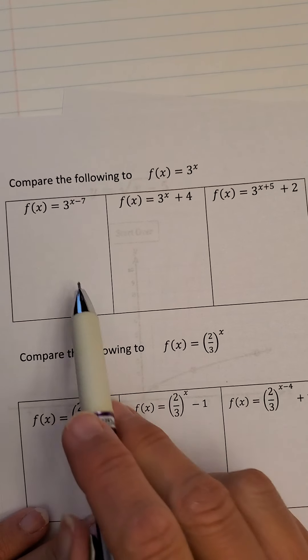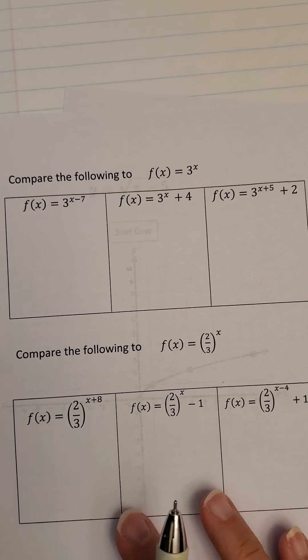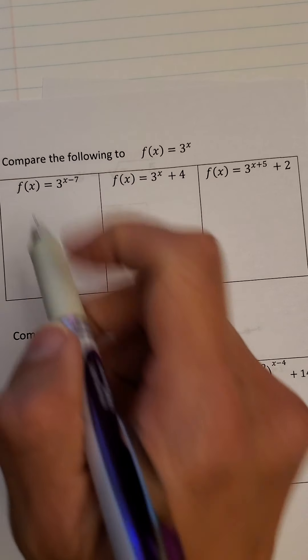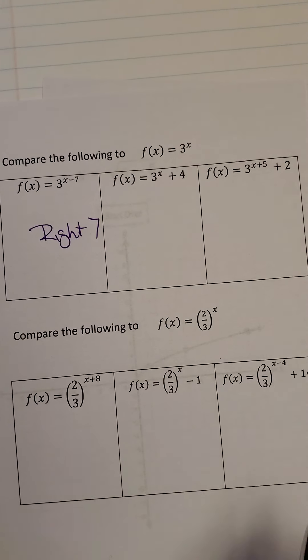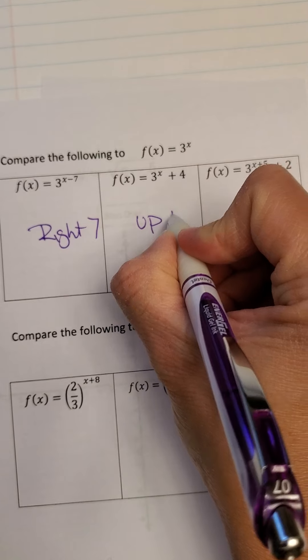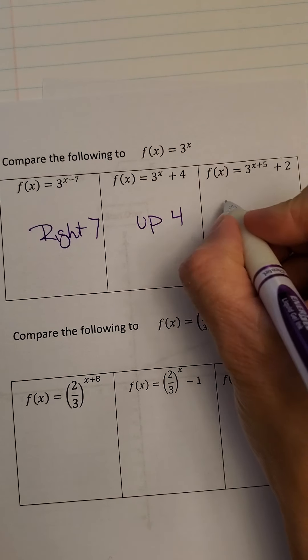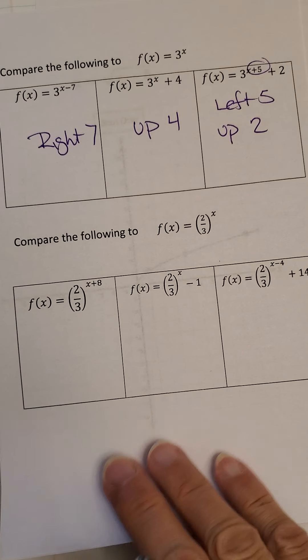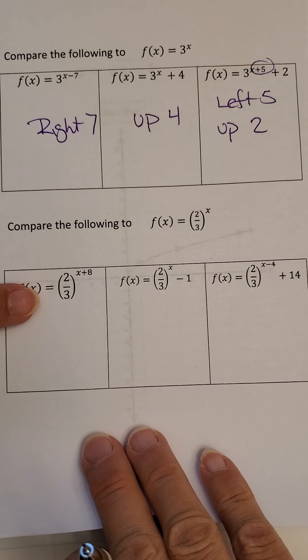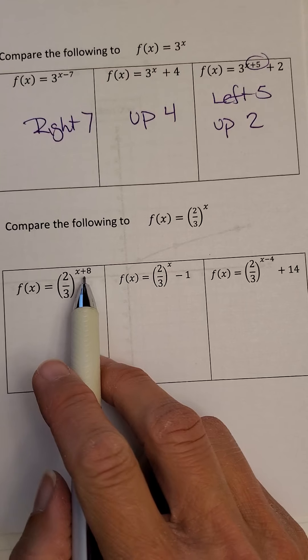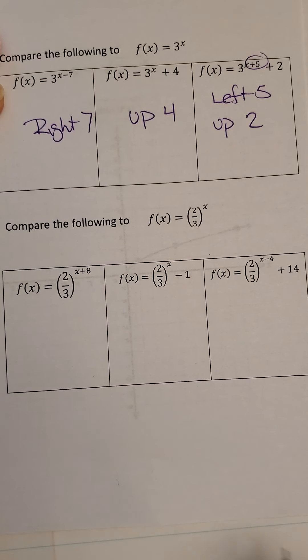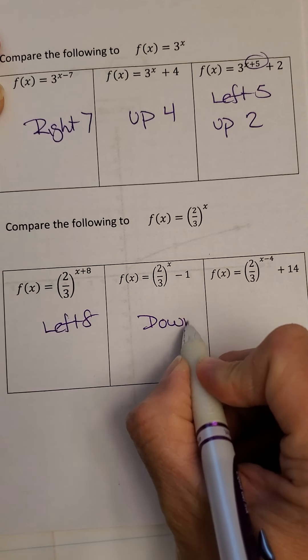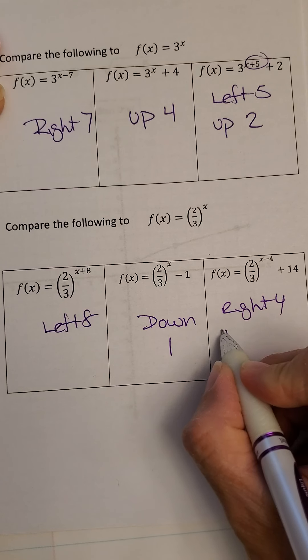All right. So let's look at these. What is happening to each of these? So here we go. 3 to the x minus 7. It's just with the x. That means it moved right 7. This is not with the x. It's not part of the exponent. That's an up or down. So because it's positive, it's up 4. This is plus 5. That means I went left 5. It's with the x as the exponent. The 2 is not. So that means the 2 tells us to go up 2. And it doesn't matter if it's a fractional part. This is a growth model. This is a decay model. It doesn't matter which one it is. The left and right up and down is still going to be left and right with the x, up and down with that k, that plus not as an exponent. So this one would be left 8. This one would be down 1. And this one would be right 4 and up 14.